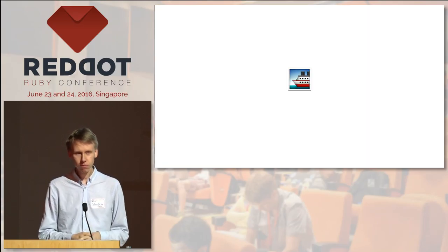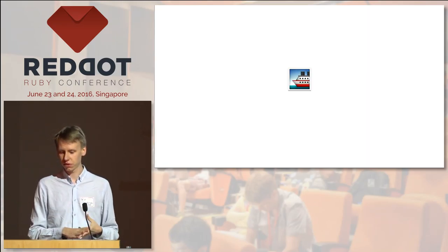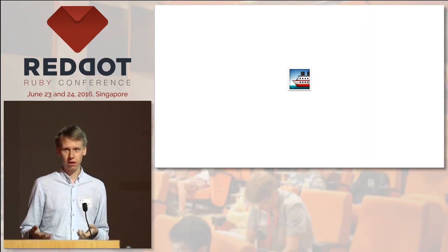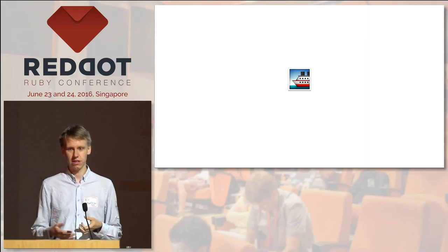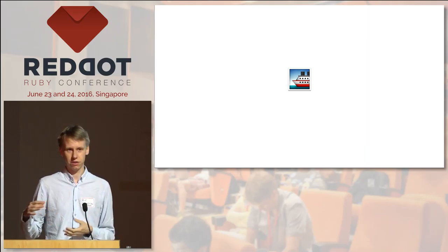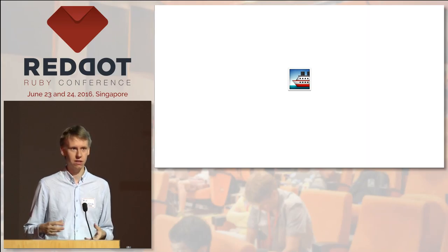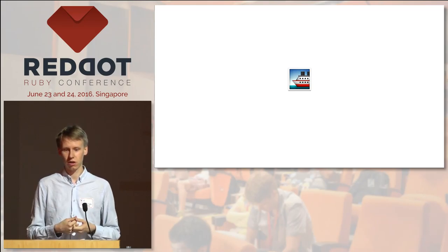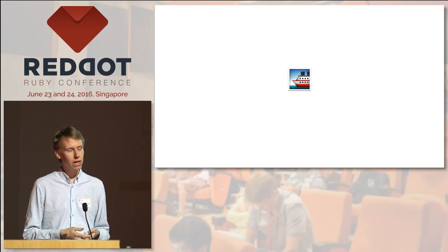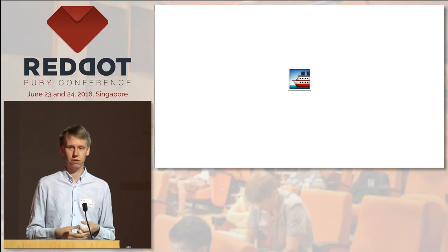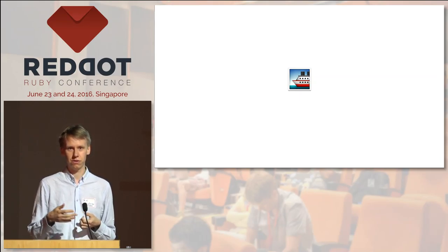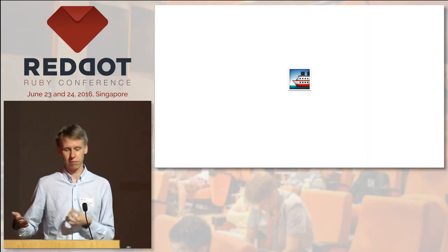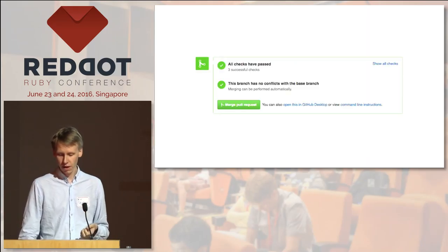To give you a better idea of how this looks, let's start with an example. At Shopify, every developer is responsible for shipping their own features. We don't have release engineers who push others' commits. If you made a feature, you're responsible to deploy it, verify it works, and if it doesn't, to roll it back.